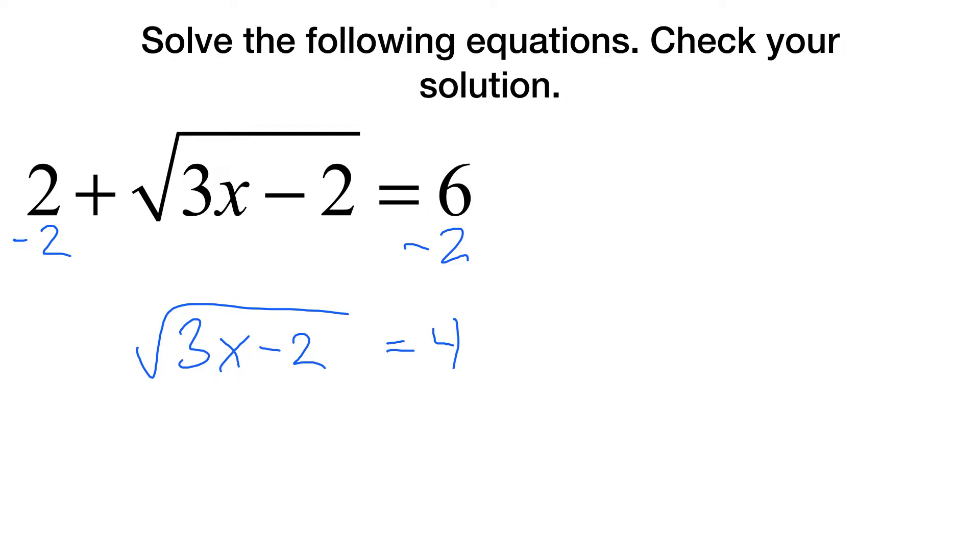At that point, once we have the square root by itself, or the cube root, or whatever type of root it is, what we do is we take the type of root it is and we raise it to that power. So in this case, we're going to square this side. But because we're squaring one side, we have to square the other. So we end up getting 3x minus 2 equals 16.